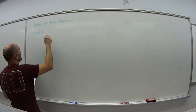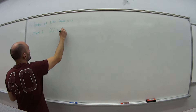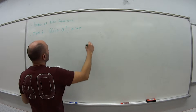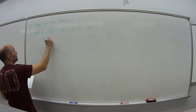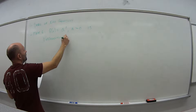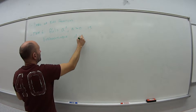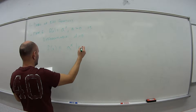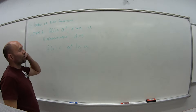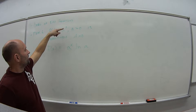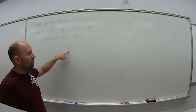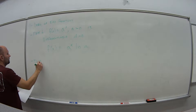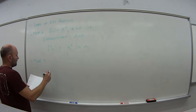We have Theorem 6, which says that f(x) equals some exponential function a to the x, when a is greater than 0, this is differentiable and the derivative f'(x) is equal to a to the x times the natural log of a. So if I have 3 to the x power, the derivative of that would be 3 to the x times the natural log of 3.